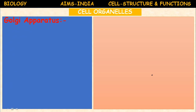Cell organelles: the cell organelles are the minute structures embedded in the cytoplasm of the cell. They are called cell organelles, which include mitochondria, plastids, ribosomes, endoplasmic reticulum, Golgi apparatus, lysosomes, vacuoles, etc. They are very important because they carry out very crucial functions.